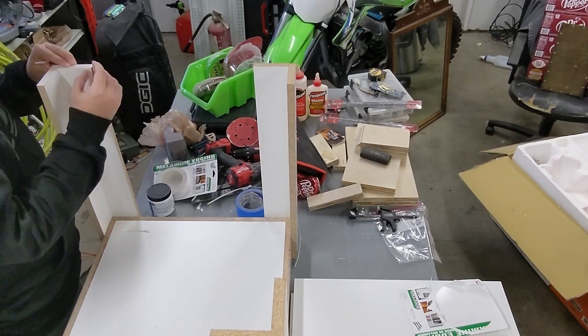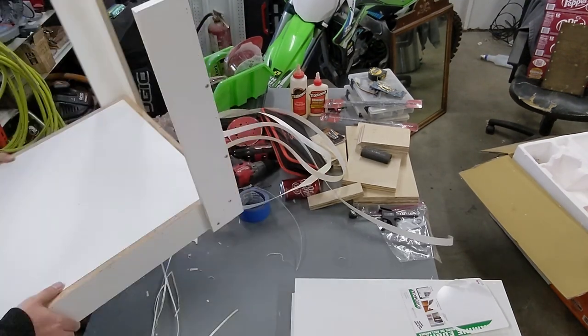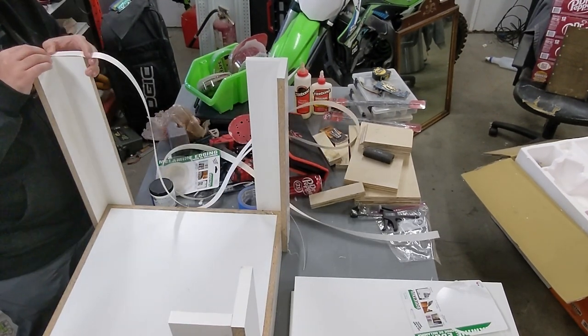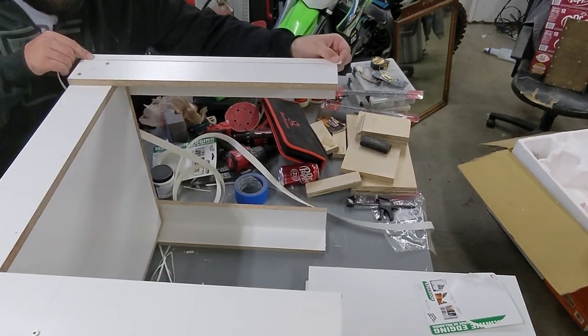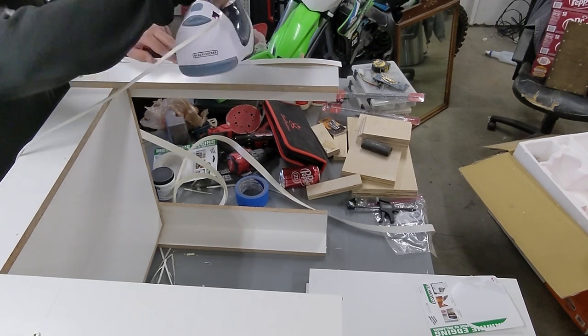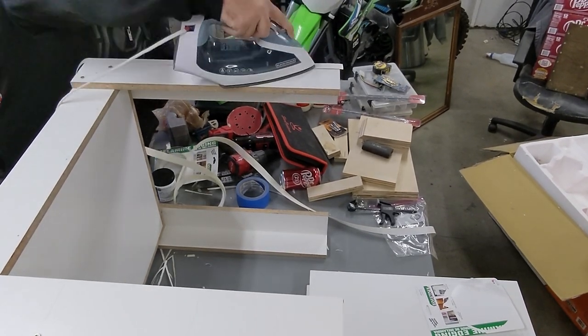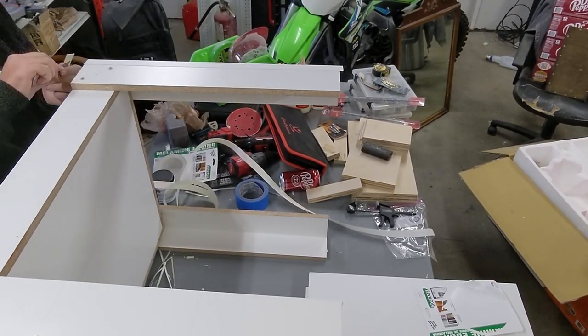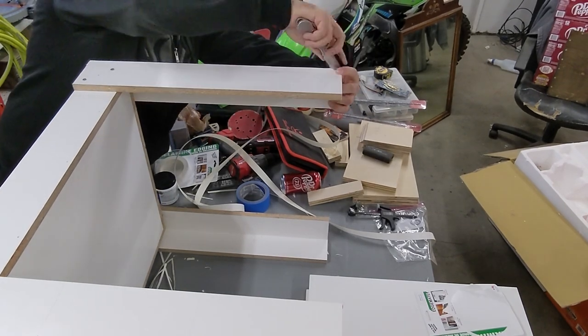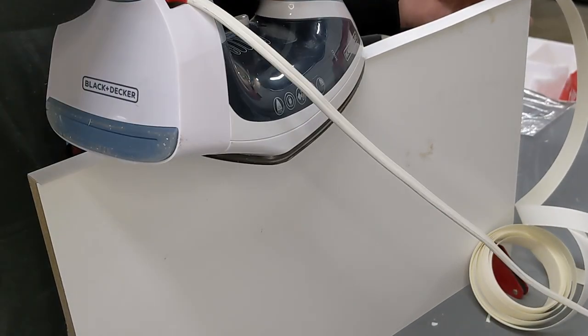It cuts pretty easy, but also if you mess up putting this stuff on, you can remove it or adjust it with the iron. You just get it hot again, push it in place while the glue is warm, and then straighten it out and let it cool back down and it'll hold itself in place.